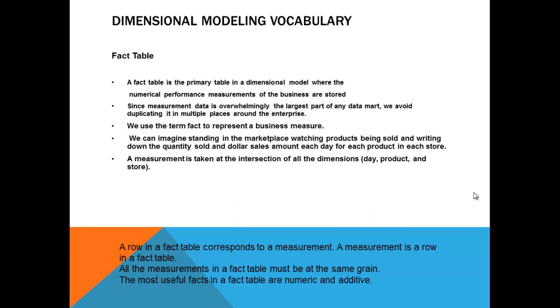A measurement is taken at the intersection of all the dimensions, their products and store. When you wanted to do a multi-dimensional analysis, you will have to capture the information based on at least these minimum three dimensions. On which day the transaction has occurred. Which product is being sold and which store sold that product. That is the minimum thing which you are trying to identify as part of a transaction. And the list of dimensions define the grain of a fact table and tells us what the scope of the measurement is.